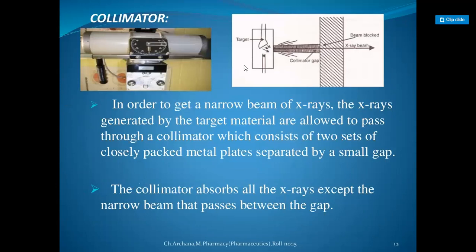The collimator: in order to get a narrow beam of X-rays, the X-rays generated by the target material are allowed to pass through a collimator, which consists of two sets of closely packed metal plates separated by a small gap. The collimator absorbs all the X-rays except the narrow beam that passes between the gap.